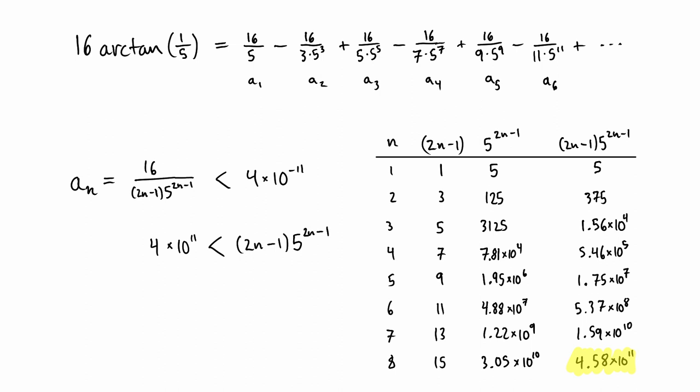Hence, the eighth term of the series for 16 arctan of 1 fifth has absolute value less than 4 times 10 to the minus 11, and therefore seven terms are sufficient to approximate the arctan to within that error budget.